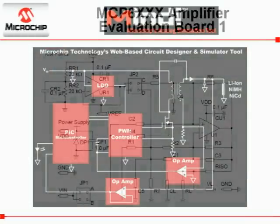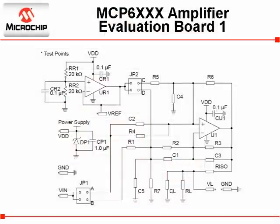The MCP6X Amplifier Evaluation Board 1 is designed to support inverting and non-inverting amplifiers, voltage followers, inverting and non-inverting comparators, and inverting and non-inverting differentiators. This board supports all Microchip single op-amps in eight lead PDIP and SOIC packages.